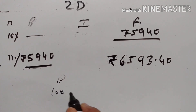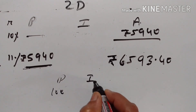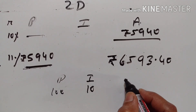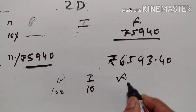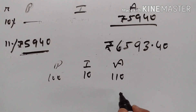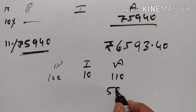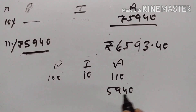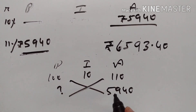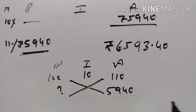Suppose the principal is equal to 100, interest is equal to 10%, the amount is equal to 110. So if the amount is Rs. 5940, what is the principal? 100 into 5940 divided by 110.